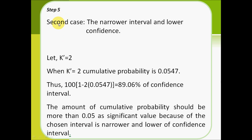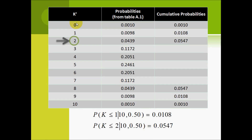Step 5, the second case: the narrower interval and lower confidence, where k' equals 2. When k' equals 2, our cumulative probability is 0.0547. Using this formula, we have a confidence interval of 89.06%. The cumulative probability should be more than 0.05 as the significance value because the chosen interval is narrower with lower confidence. The two values 0.0108 and 0.0547 are the closest we can get to 0.025. Unfortunately, 0.025 does not appear in the table.